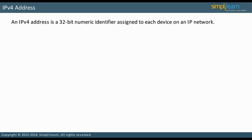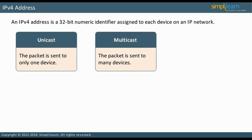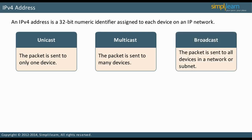There are three major types of IPv4 addresses. The first is unicast, where the packet is sent to only one device. The second type is multicast, where the packet is sent to many devices. The last type is broadcast, where the packet is sent to all devices in a network or subnet. For example, the broadcast address for the network 192.168.1.0/24 is 192.168.1.255.